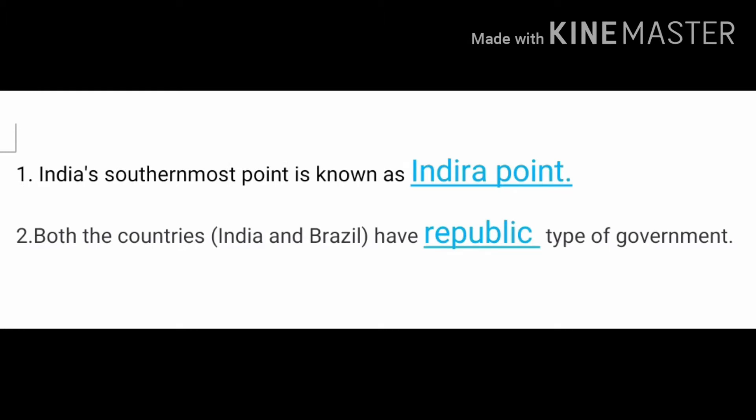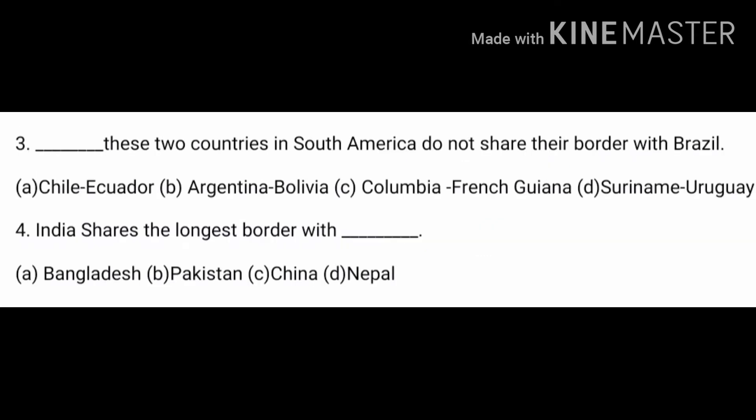Answer: India's southernmost point is known as Indira Point. Question two answer: Both the countries India and Brazil have Republic type of government. As I explain, Republic means a country that has an elected government and an elected leader, that is president.